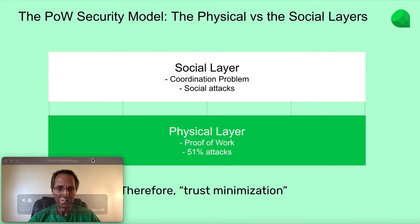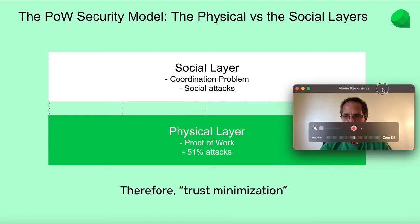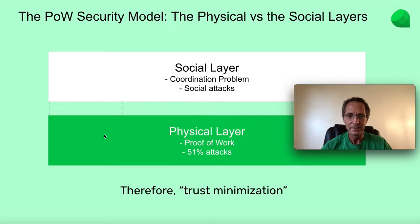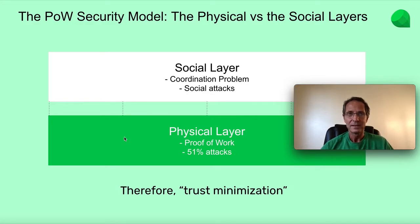However, these two layers — the physical layer and the social layer — do have security vulnerabilities, or attack vectors, that are exploitable. The good thing about blockchains is that they're very transparent, the risks are known, and all participants can increase their operational security by knowing these risks.